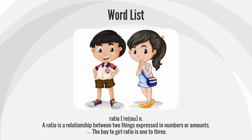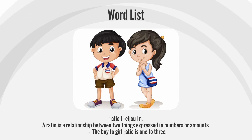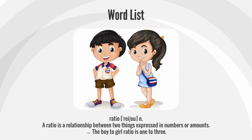Ratio. A ratio is a relationship between two things expressed in numbers or amounts. The boy-to-girl ratio is 1 to 3.